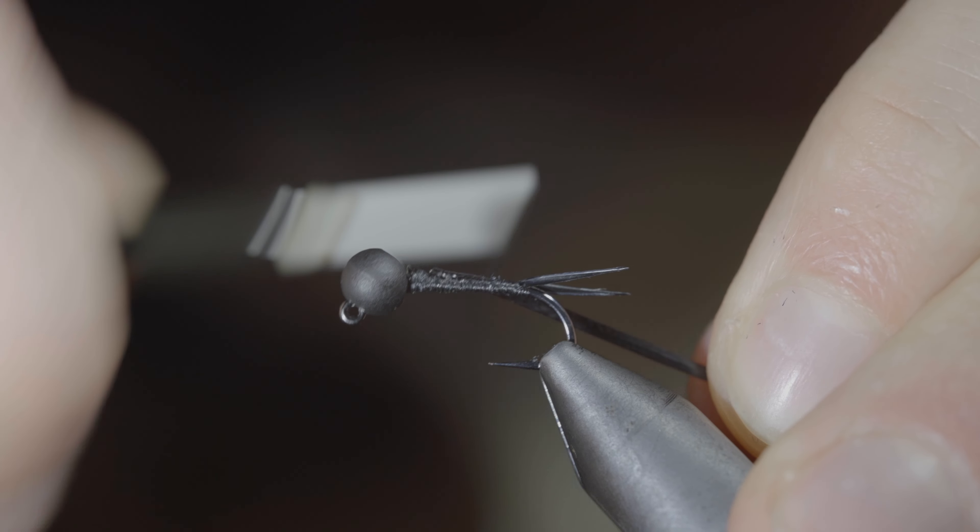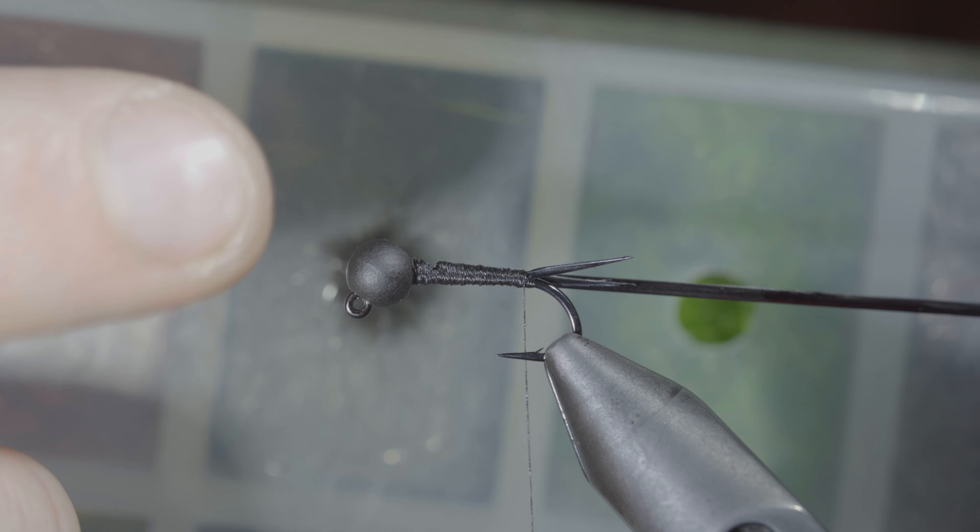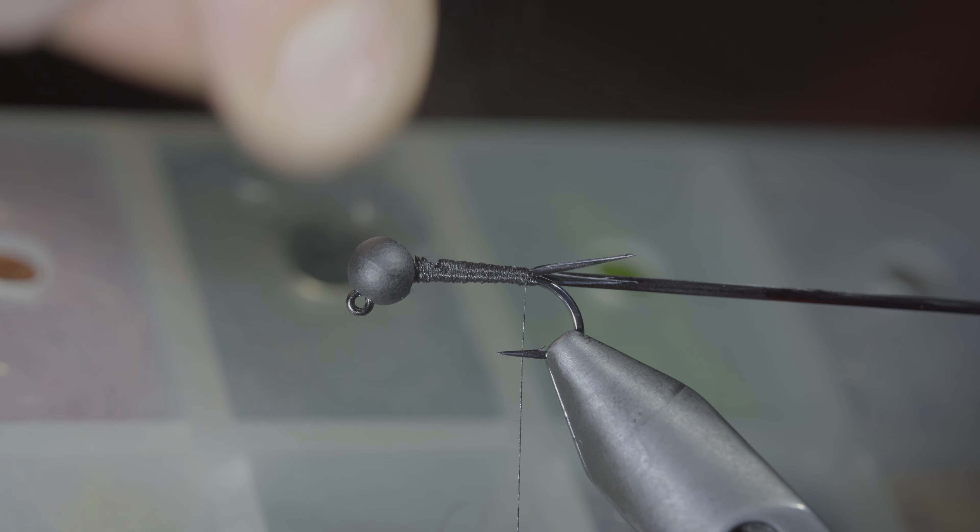Doing so by wrapping up towards the head of the fly before doubling back on your thread till you almost reach your starting point, at which point you'll reverse the direction back up towards the head of the fly. Doing this as many or as few times as you like to build up the body that you're looking for.